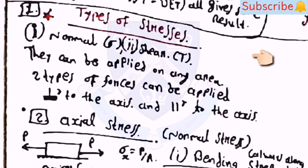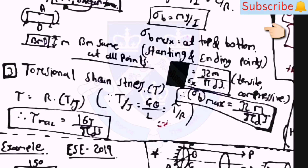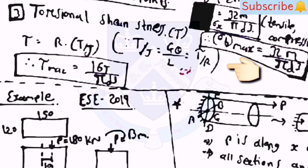Now, the types of stresses: first is normal stress or shear stress applied on any area. Two types of forces can be applied — perpendicular to the axis and parallel to the axis. Axial stress (also known as normal stress) is sigma_x = P/A. For bending stress, sigma_b = M·y/I = E/R, so sigma_b = M·y/I. Also, sigma_b = 32M/(π·d³). For torsional shear stress, T/J = G·φ/L = tau/r, so tau = r·T/J and tau_max = 16T/(π·d³).